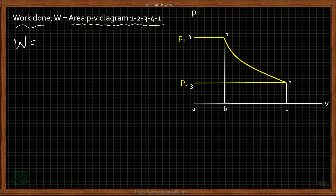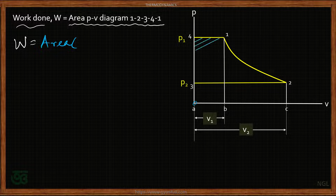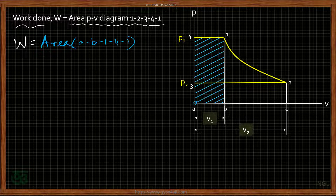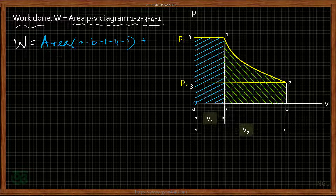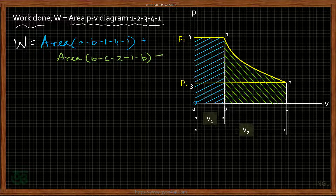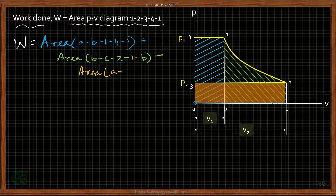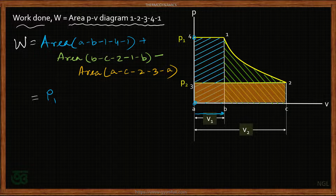The work done equals area A-B-1-4 (the upper rectangle) plus area B-C-2-1-B (the area under the expansion curve), minus the lower rectangular area A-C-2-3-A. The first area is a rectangle where height equals p1 and width equals v1. The expansion curve B-C-2-1 follows the relation pv^γ = C, which we assume is a reversible adiabatic process.